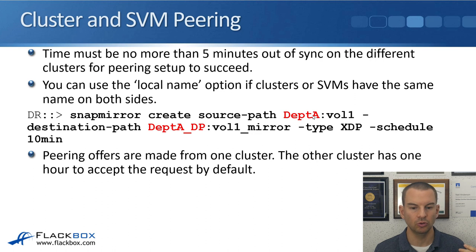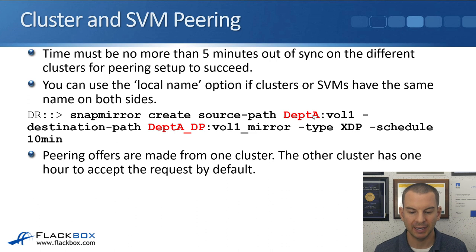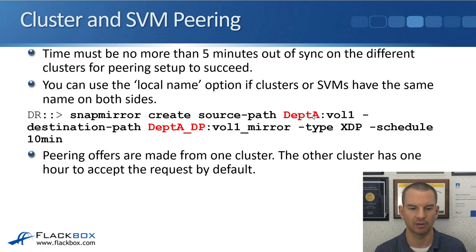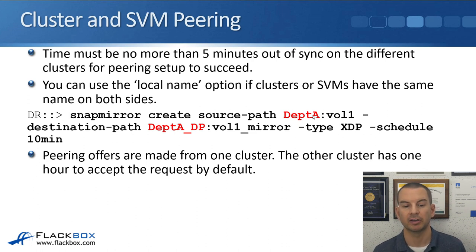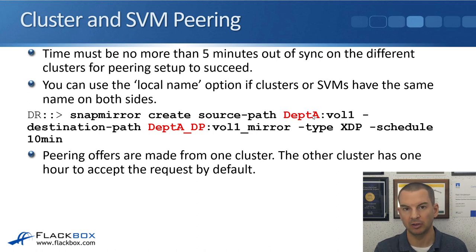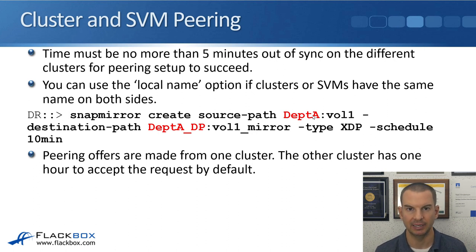If you do have the opportunity to do proper planning beforehand, when you're planning out your clusters and the SVM naming, make sure that the SVMs all have unique names across all of the different clusters. When you do configure the peering, the offers are made from one cluster and the other cluster has one hour to accept the request by default. So you put the peering offer in on one side, and then on the other side you have to accept that offer within one hour, though you can specify a longer time period if you want to.